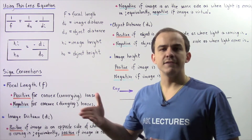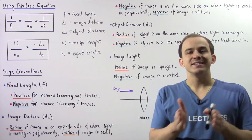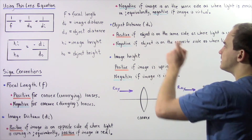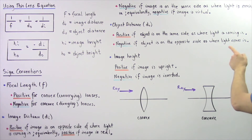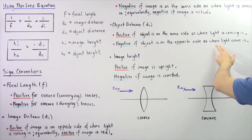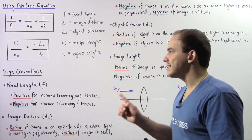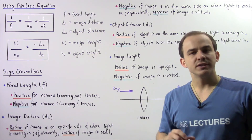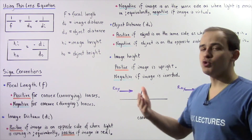Now let's move on to the object distance do. The object distance is the horizontal distance from the center of our lens to where our object is placed. We define the object distance to be positive if the object is on the same side as where the light is coming in, and negative if the object is on the opposite side. Whenever we're dealing with a single lens, the object distance will always be positive. But in a system of two or more lenses, it's possible for the object distance to be negative.